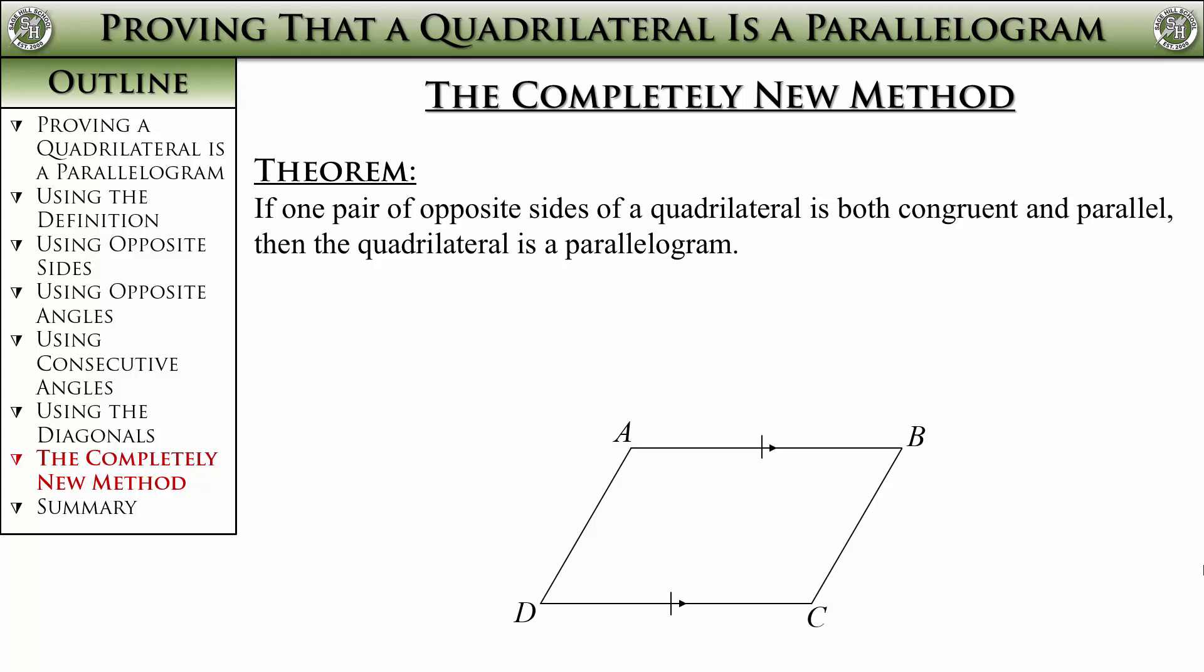The common mistake is doing something like this. Here one pair of opposite sides is congruent, but the other pair of opposite sides is parallel. This does not work. Make sure it is the same side that is both parallel and congruent like this.